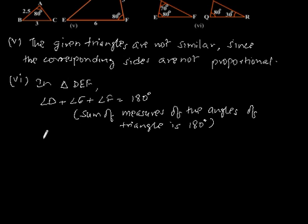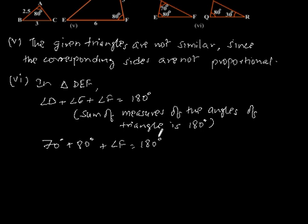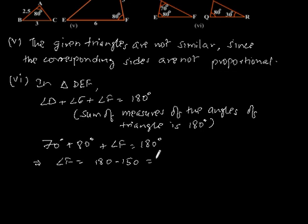So angle D is 70 degrees, angle E is 80 degrees, and angle F equals 180 minus 70 minus 80, which gives angle F equal to 30 degrees.